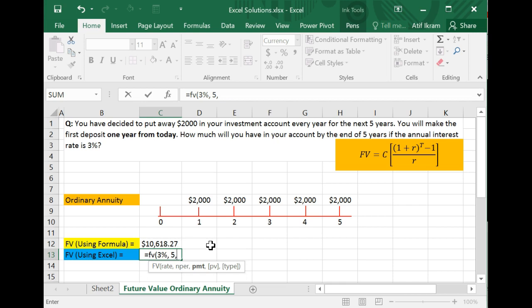And then the payment. Payment is Excel's way of asking you is there a constant cash flow here. Yes there is. You're making a constant deposit of $2,000 every year. In this case you might want to enter this $2,000 as a negative. The reason for that is that this is an outflow happening. This is money going out of your pocket.